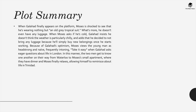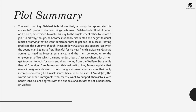When Galahad finally appears on the platform, Moses is shocked to see he's wearing nothing but an old grey tropical suit with no luggage. When Moses asks if he's cold, Galahad insists the weather isn't particularly chilly and explains he decided not to bring any luggage because he'll simply buy new belongings once he starts working. Because of Galahad's optimism, Moses views the young man as headstrong and naive, frequently telling him to take it easy when Galahad asks eager questions about life in London. The two men get to know one another on the way from Waterloo to Moses' small apartment, where they have dinner and Moses relaxes, reminiscing about Trinidad.